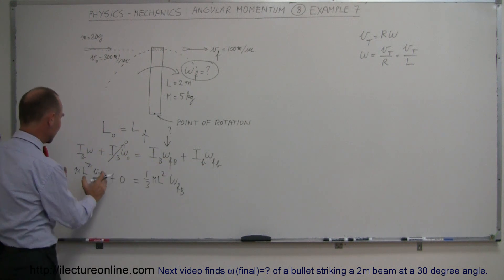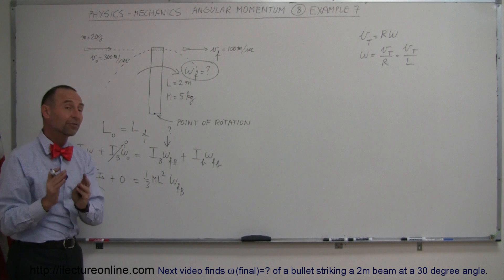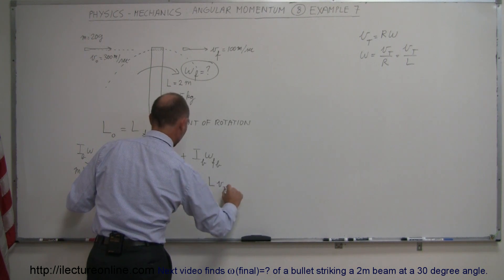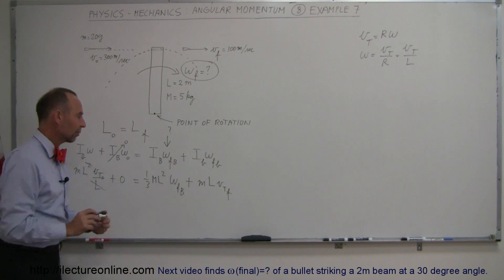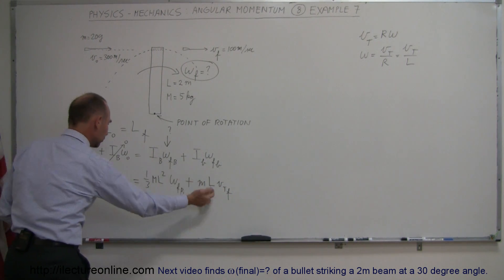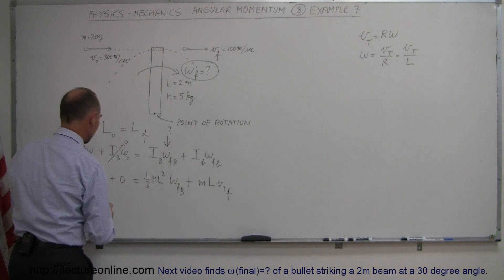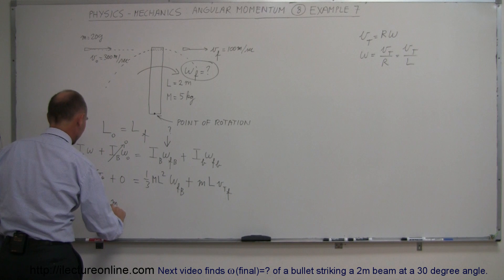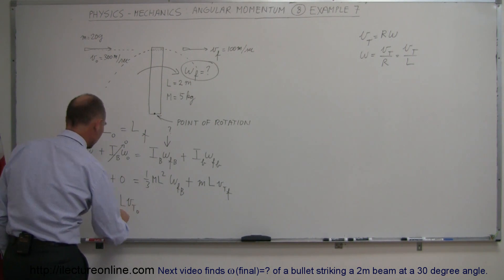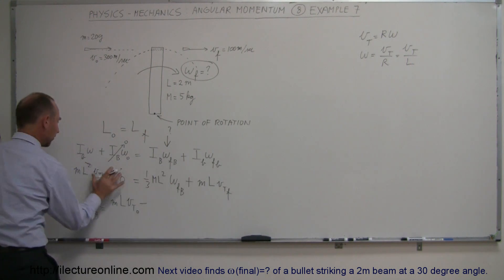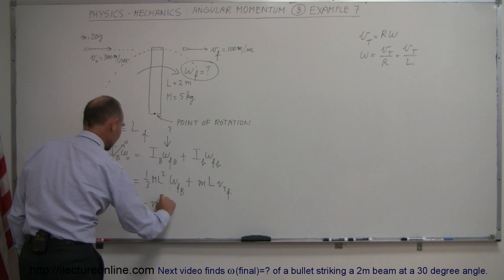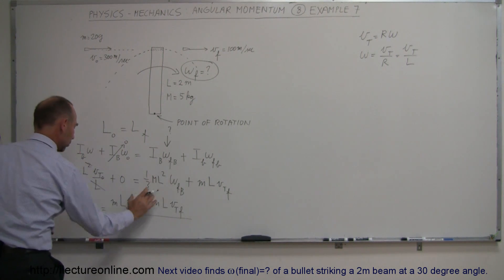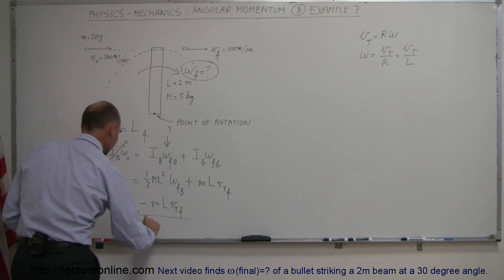The bullet's final term works the same way — it equals the mass of the bullet times the length of the beam times the final tangential velocity of the bullet. To solve for omega-final of the beam, we move the bullet's final angular momentum term to the left side and divide everything by the coefficient of omega, which is one-third the mass of the beam times L squared in the denominator.